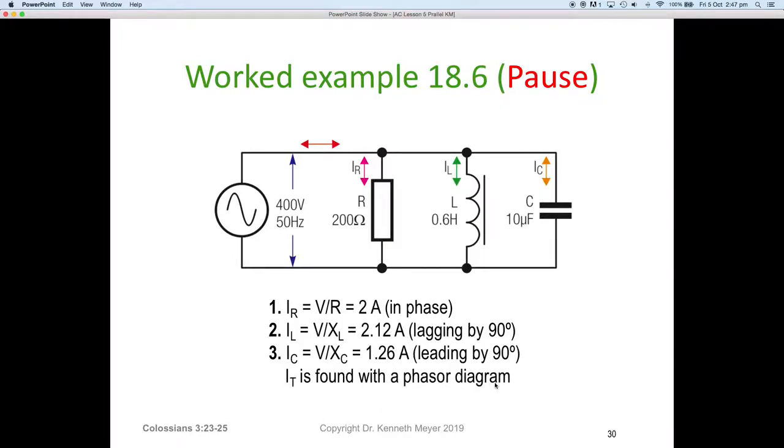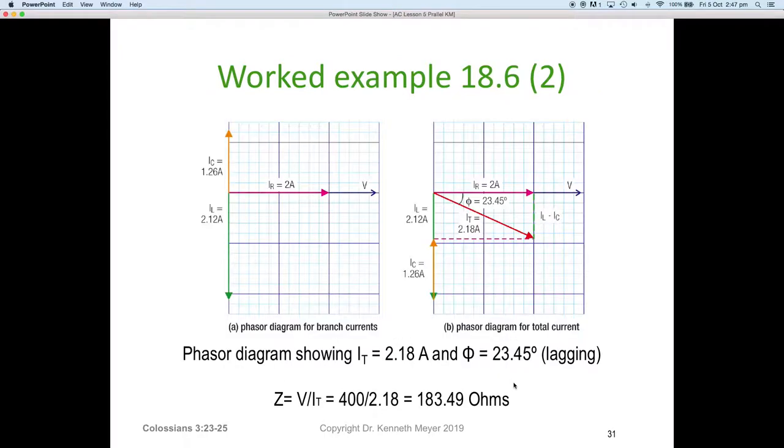For I total, we're going to need to do a phasor diagram. Here's our 2 amps, the pink phasor, on the horizontal in phase with the voltage. Our IC leads by 90 degrees, so we've scaled up here 1.26 amps at 90 degrees. Then finally, our current for our inductor in the opposite direction at 90 degrees.